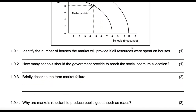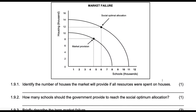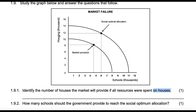Identify the number of houses the market would produce if all resources were spent on houses. So if we spend all resources on houses, we'll produce 10,000 with free operating markets or 14,000 with government intervention. If we spend all our resources on houses, then we won't produce any schools — we will produce zero schools.